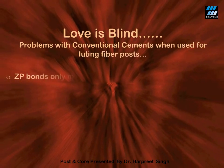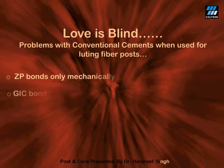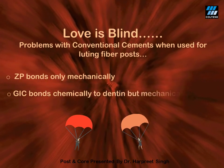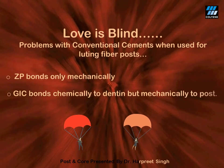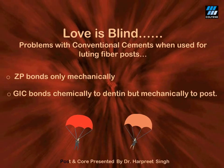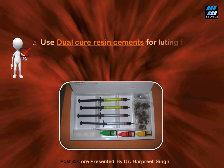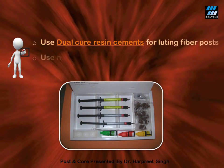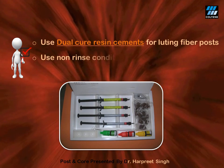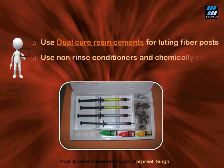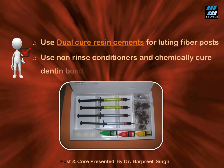The problem with zinc phosphate is that it binds only mechanically to everything. The issue with glass ionomer cement is that it bonds chemically only to dentine, but only by a mechanical bond to the post. Therefore, it is recommended to use dual-cure resins for luting fibre posts. When using these luting resins, it is advocated to use non-rinsed conditioners for conditioning the dentine and a chemically cured dentine bonding agent.